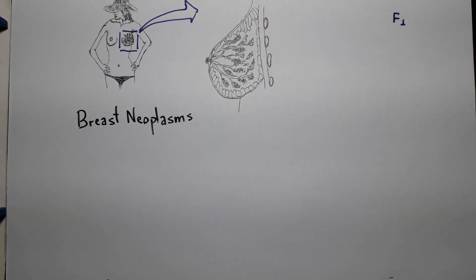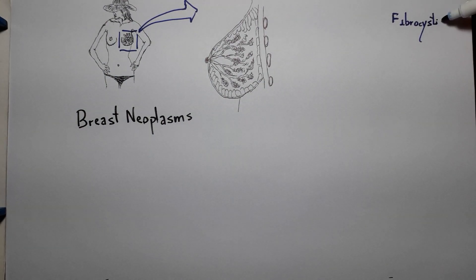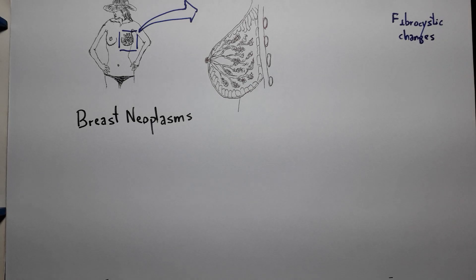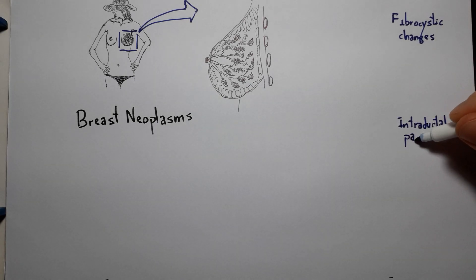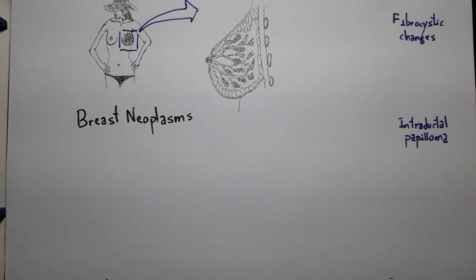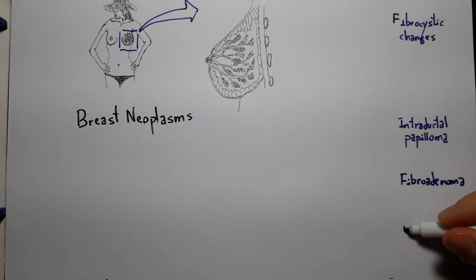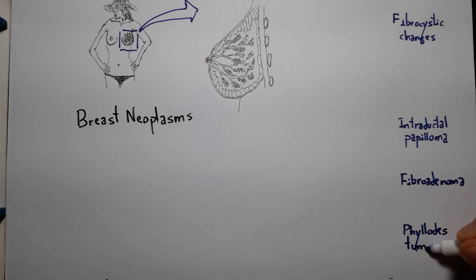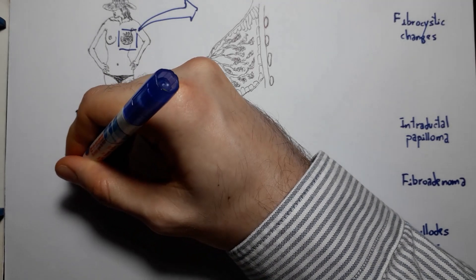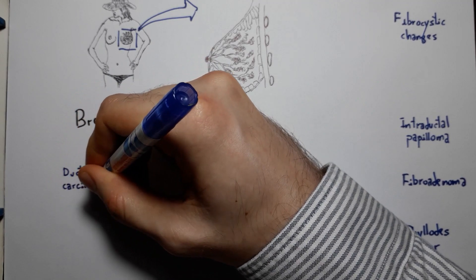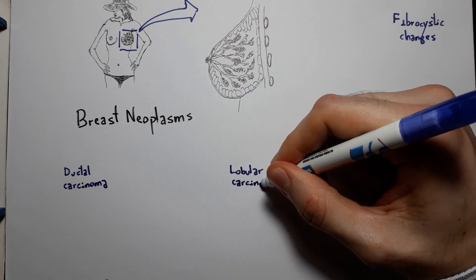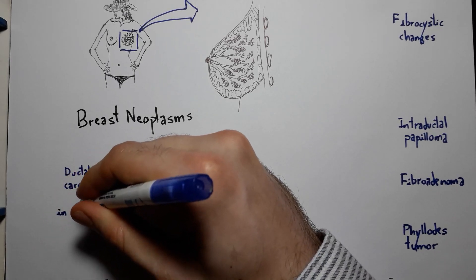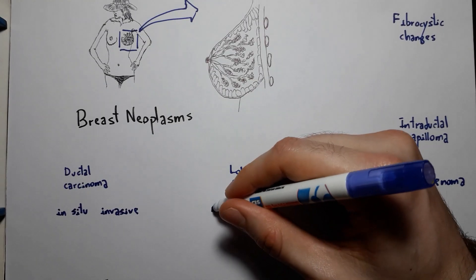We could start by seeing neoplasm by neoplasm in sequence, but instead we are going to start by getting a bird's eye view of all the major cancer types. This way, you can have a rough idea of what could be a possibility when looking for breast cancer.